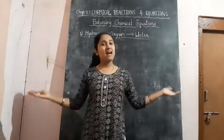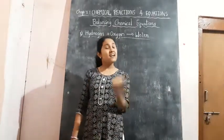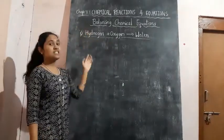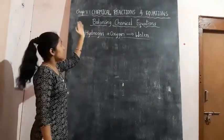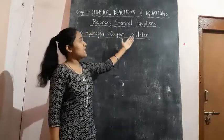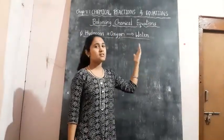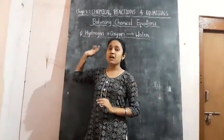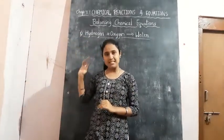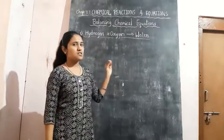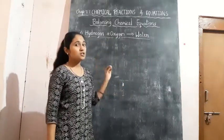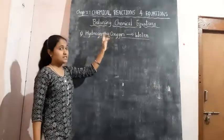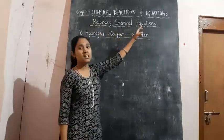Namaste all. Welcome back to my YouTube channel. I am back again with a new topic of science — Chapter 1 of NCERT Class 10 Science. The name of the chapter is Chemical Reactions and Equations. This is a part of Chemistry, and I am not going to cover all the topics of this lesson, but just some of the important topics. The most important topic in this chapter is Balancing Chemical Equations.